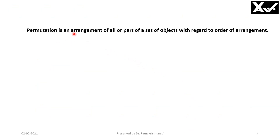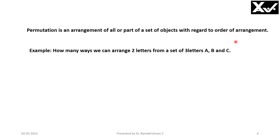What is permutation? Permutation is an arrangement of all or part of a set of objects with regard to the order of arrangement. Order of arrangement is significant — AB and BA are different cases. For example: how many ways can we arrange two letters from a set of three letters A, B, and C?